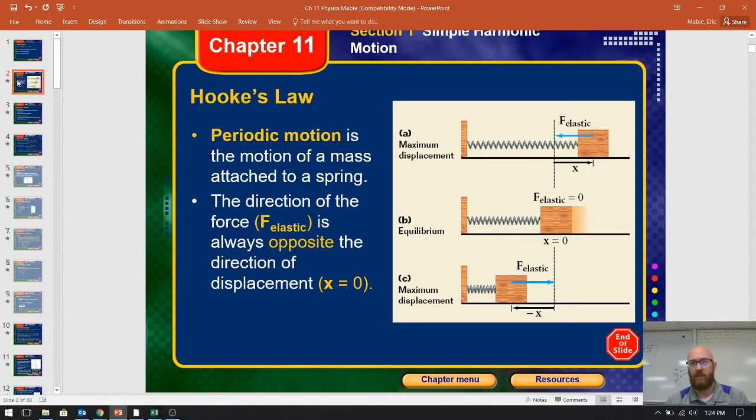The easiest way to look at this is a spring. You sit there and move it from left to right. Basically in the picture A, you've pulled it away some distance of X. When you let go, as it goes back past that dotted line, when it hits that dotted line, it's going to be moving as fast as it possibly can.